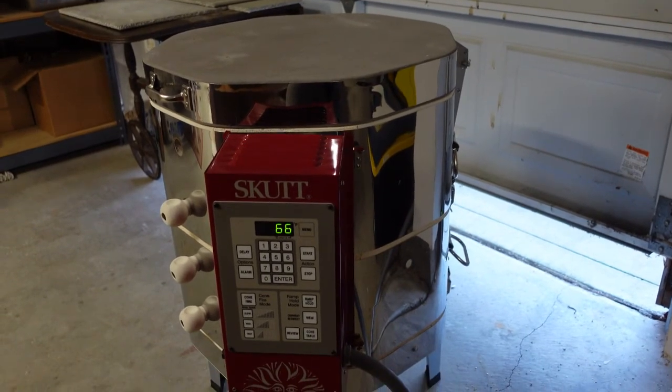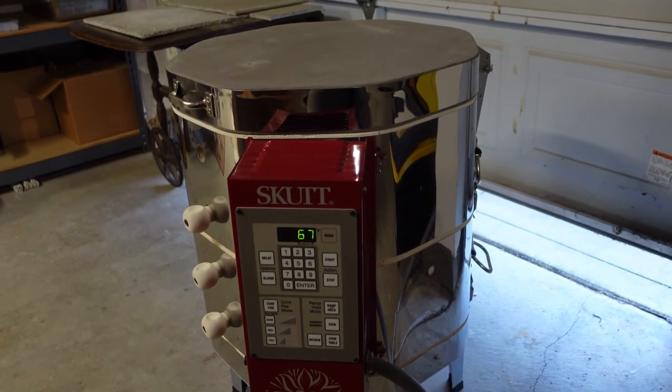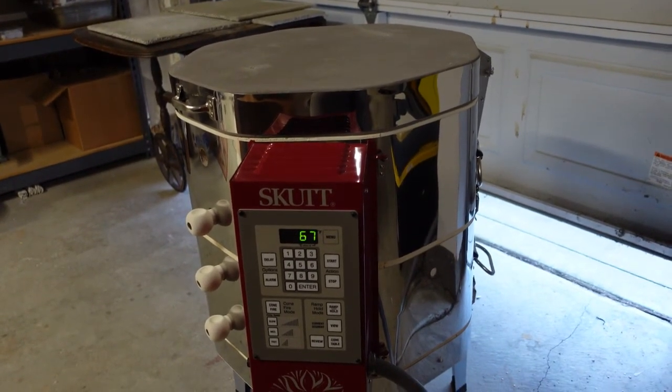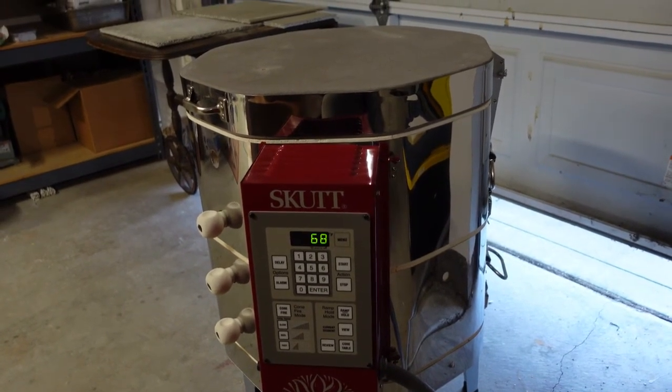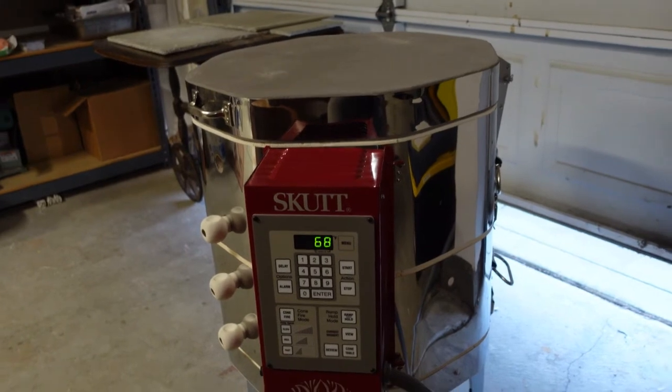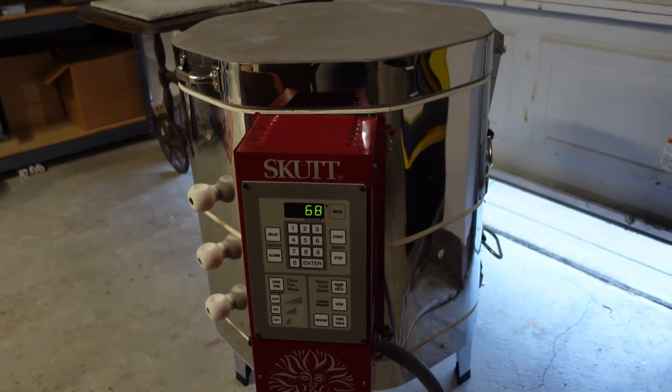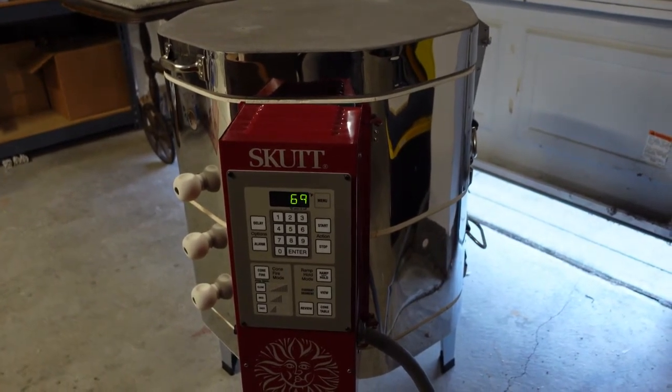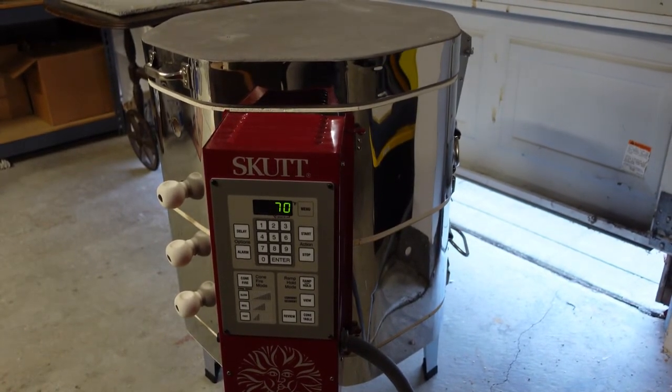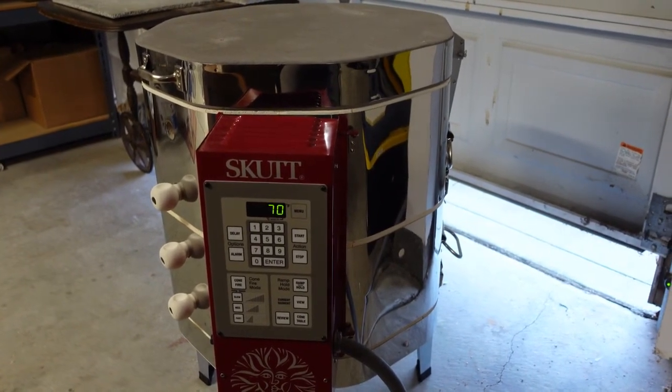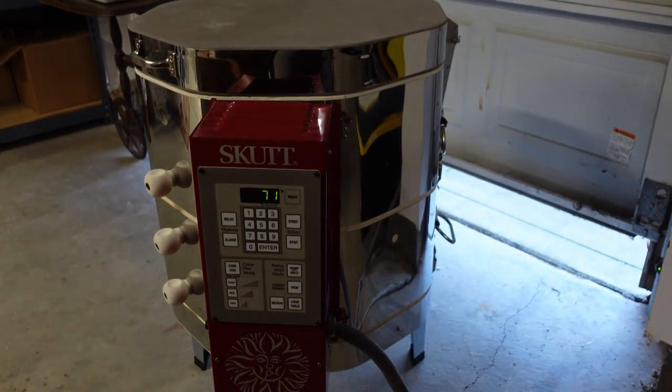When you buy a kiln, there's really three or four things you need to think of. One is, do I have the power for it? Does my house or wherever I'm putting this have the electrical capabilities to fire my kiln? Now you can buy kilns that take less power, so maybe you can get around it that way. But if you don't know if your house has what it needs to fire a kiln, then I recommend talking to an electrician.